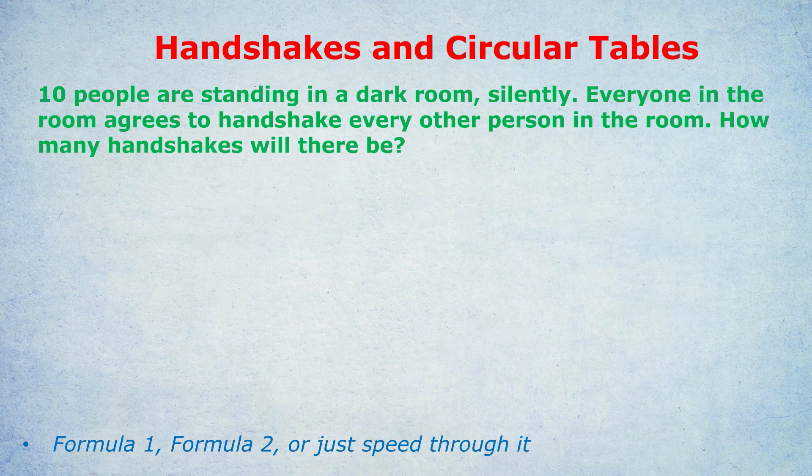What I mean by speeding through it is that you can logically deduce the answer. Each of the 10 people is going to shake nine other people's hands, so it does make sense to say 10 times 9. The thing you would have to think about, however, is that person A shaking person B's hand would be counted for A and would also be counted later when you were doing B's handshakes. So you'd be double counting every single handshake. Logically, you'd have to halve that total to get the real answer.